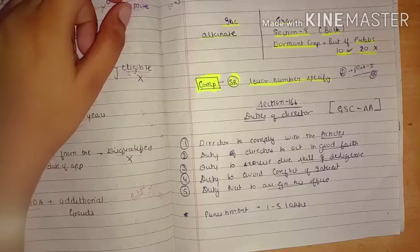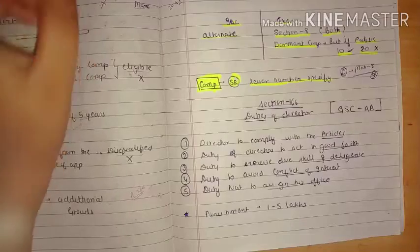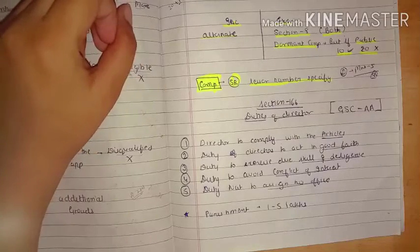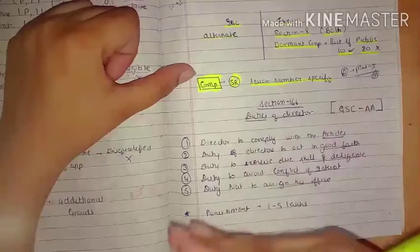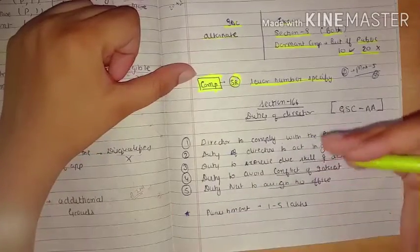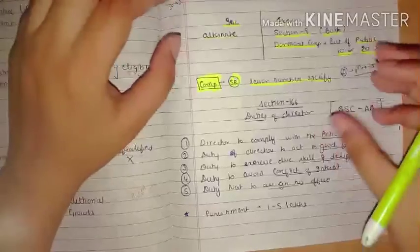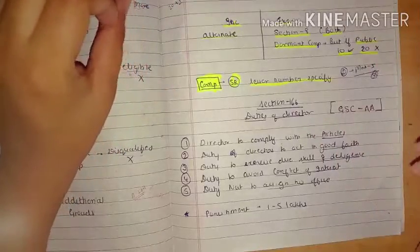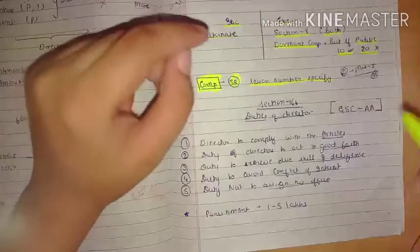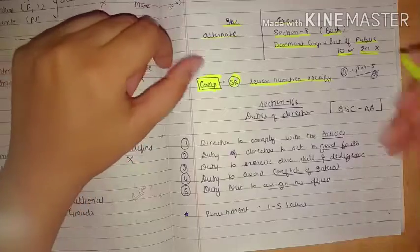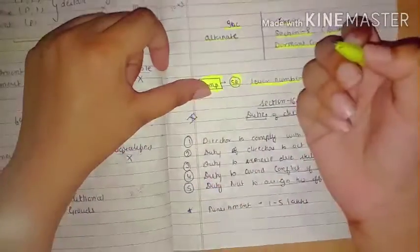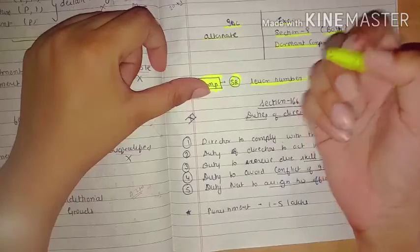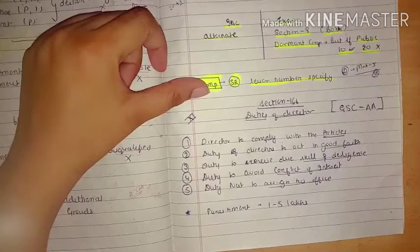Today we are taking law's regular lectures. This is going to be a little different from our videos. We are going to share a memory technique in this video. Now we are in Chapter 11 of Companies Act 2013, Appointment and Qualification of Director.